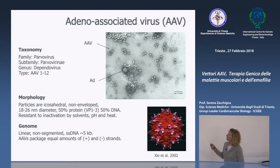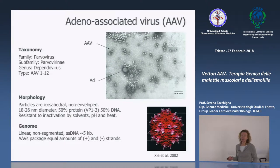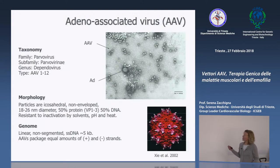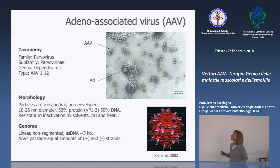Sono vettori che si basano su un piccolo parvovirus. Si chiama adeno associato, ma non ha niente a che fare con adenovirus. Si chiama così solo perché è stato scoperto come un contaminante di una preparazione di adenovirus, come visibile in questa microscopia elettronica, in cui i pallini più grossi sono le particelle di adenovirus e i piccoli pallini sono AAV.